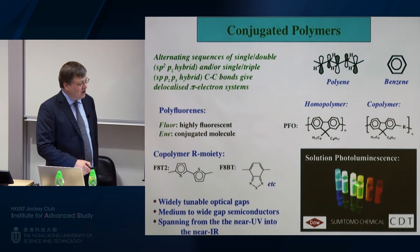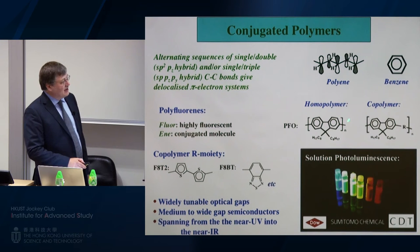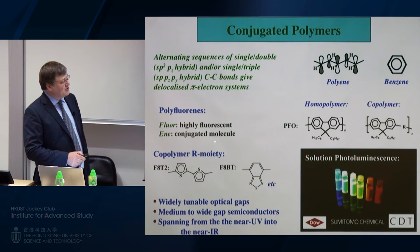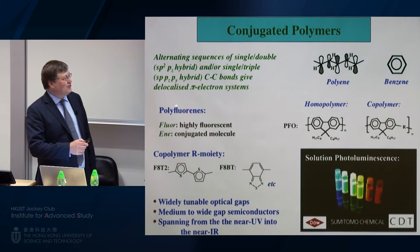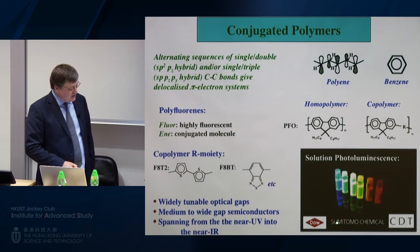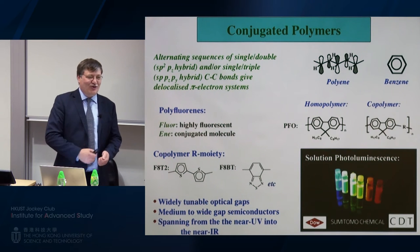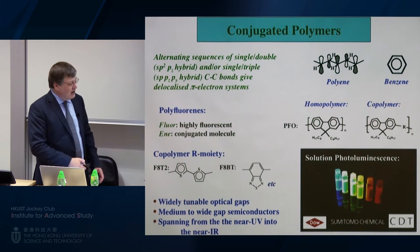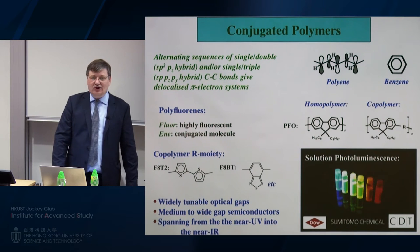We can use chemistry to tune the properties - for example, the optical emission color of the material. We can clearly see that we have access to the full visible spectrum, tuning from blue all the way through to the red. As an aside, these materials are called fluorenes - they're conjugated molecules and they're fluorescent. These materials were initially developed at Dow and also in Katsumi Yoshino's group in Japan. You can tune the optical gap across the full visible spectrum, and think of these as medium to wide gap semiconductors with a range of spectral characteristics interesting for many applications.